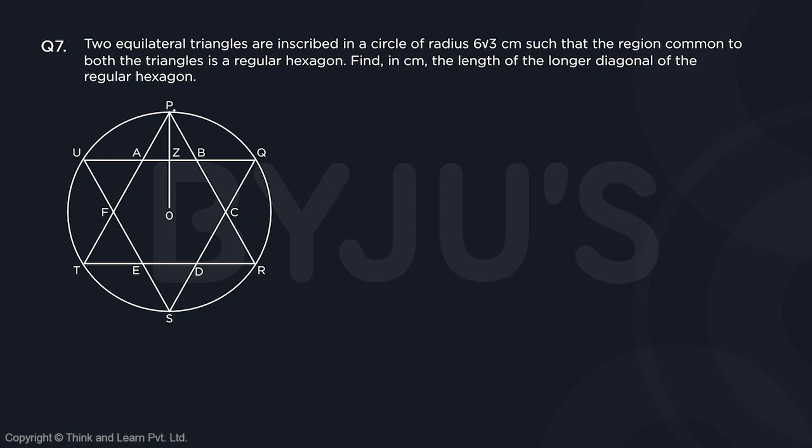So here we have P, T, R as an equilateral triangle, then we have Q, S, U as the other equilateral triangle. When they are placed in such a way we get A, B, C, D, E, F as a regular hexagon.